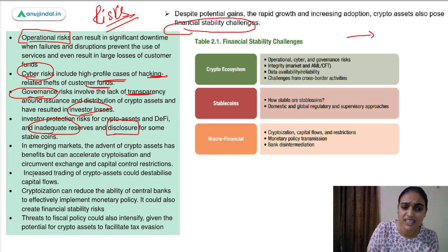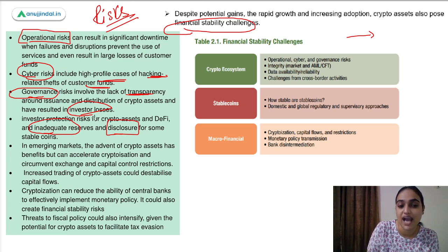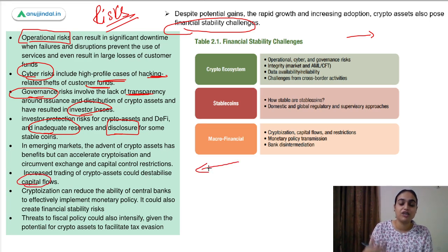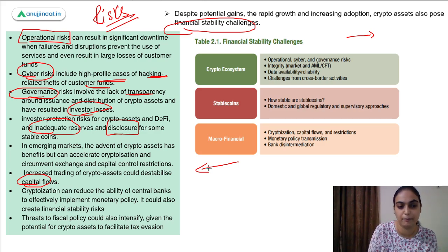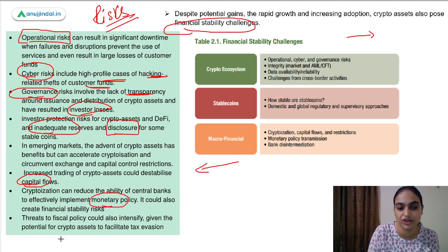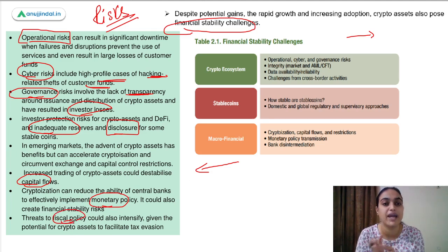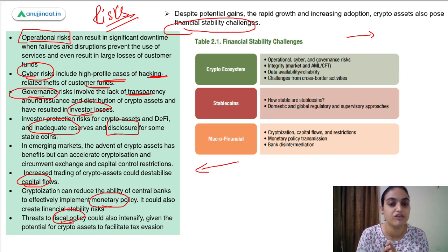Increased trading and cryptoization can affect capital flows — people who used to invest in other markets will now invest in cryptos which are not regulated at all. Capital flows that would have been invested in more reliable activities will be hampered. This also creates problems for central banks when implementing monetary or fiscal policy, and people might evade taxes as well. So it poses overall macro-financial risks to the system.